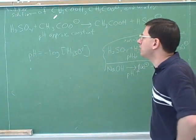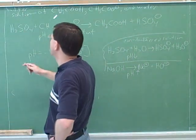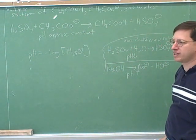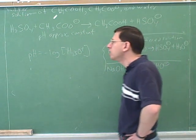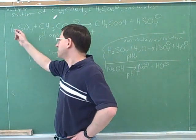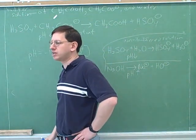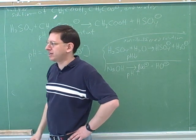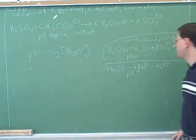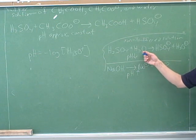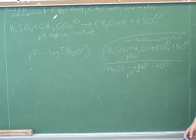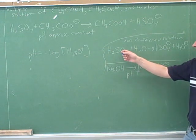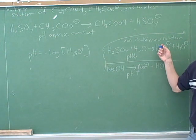The whole point of this equation was to show how a buffer solution will prevent the pH from changing. Normally, if you add sulfuric acid, you would expect that to decrease the pH. We saw how that worked in pure water — if you just add sulfuric acid to pure water, it directly decreases the pH, because all the sulfuric acid deprotonates at once.